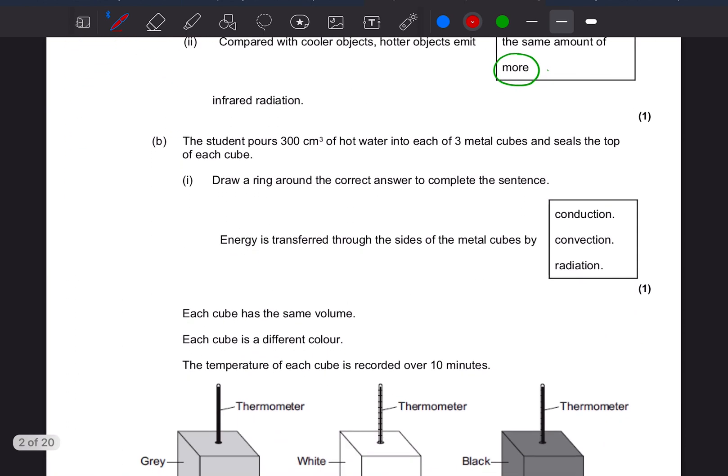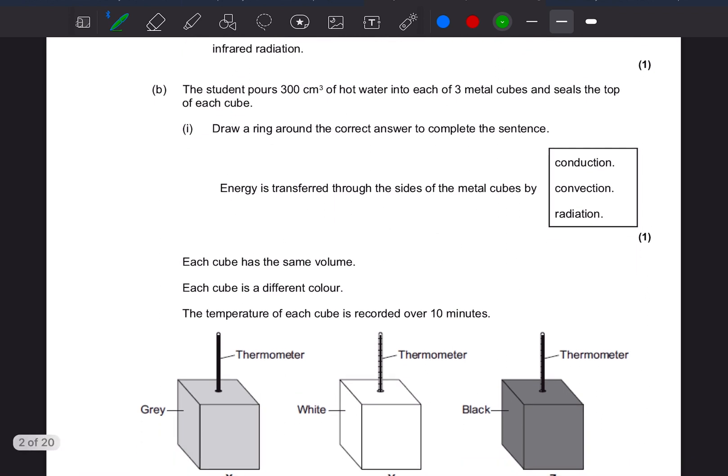The student pours 300 cubic centimeters of hot water into three metal cubes and seals the top of each cube. Draw around the correct answer to complete the sentence: energy is transferred through the sides of the metal cube by... This has caught pupils in my class many times. The interesting word here is sides. When we're doing this experiment it's all about infrared radiation so most people go for radiation, but because it's talking about the sides, the sides of the cubes are a solid and there's only one type of heat transfer that can happen through a solid.